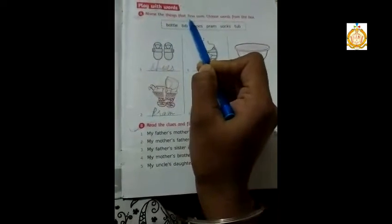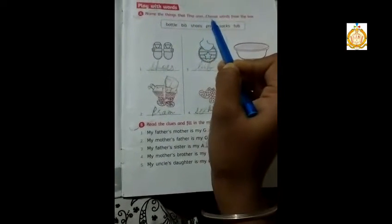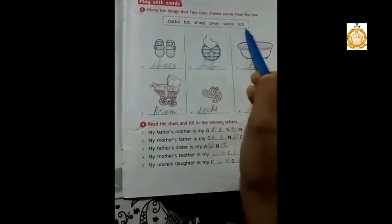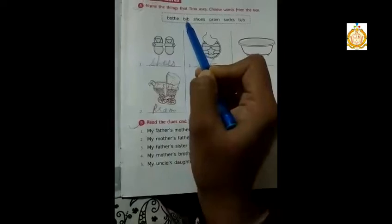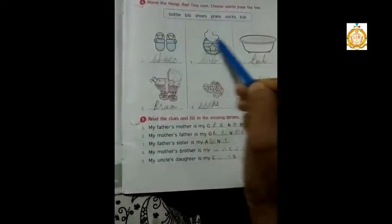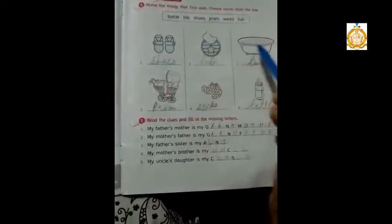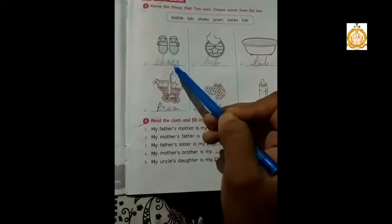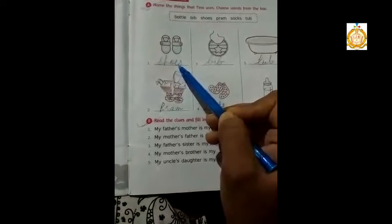Choose words from the box. There are some words: bottle, bib, shoes, palm, socks, tub. We will write the names for these pictures you are looking at now. So we will write their names. First picture is shoes.